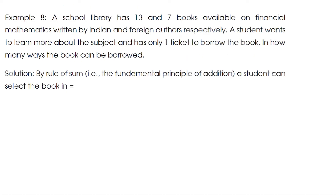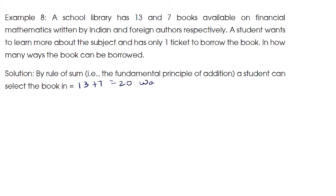Now let us understand this with an example. A school library has 13 and 7 books available on financial mathematics written by Indian and foreign authors respectively. A student wants to learn about the subject and has only one ticket to borrow the book. In how many ways can the book be borrowed? By the Rule of Sum, a student can select the book in 13 plus 7, which is equal to 20 ways.